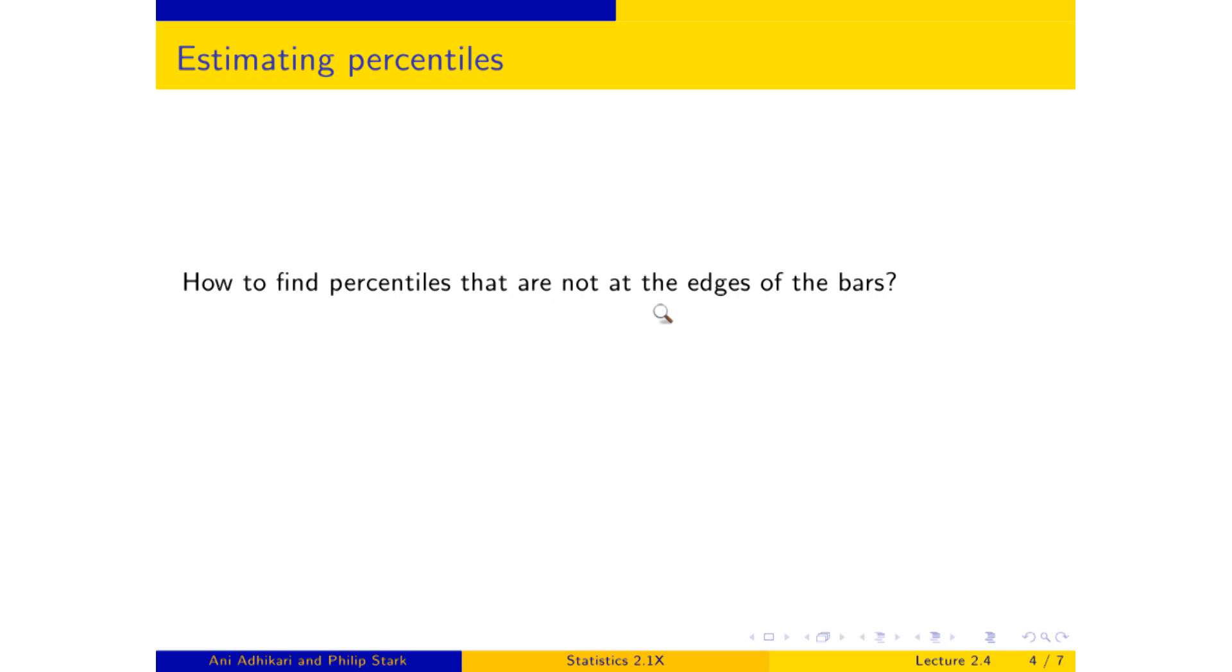So how do we find percentiles that are not at the edges of the bars? Well, in fact, it turns out that assuming uniform distribution, we can, in fact, estimate any percentile, whether it's at the edge of the bar or whether it's not. And you, in STAT 2.1x, have two ways of doing this. One way is by calculation, which I'll show you in a bit. And another way is by appealing to technology, technology that is available to you in this course, namely your online textbook. And that is where we are going to go now.